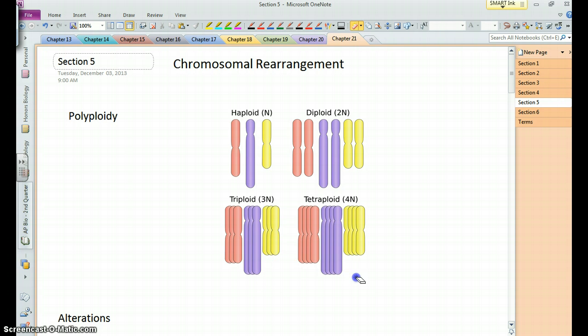This is quite common in plants, for example. Blueberries, the type that we cultivate and eat for the most part, are tetraploid, while the wild blueberries are diploids.